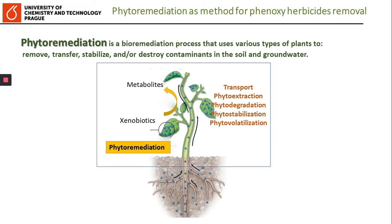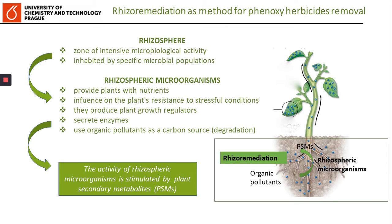Another promising and rapidly growing method of cleaning contaminated soil is phytoremediation. Phytoremediation is a bioremediation process that uses various types of plants to remove, transfer, stabilize or destroy contaminants in the soil and groundwater. The ability to take up pollutants from the soil is highly dependent on the plant species, its morphology and physiology. Plants also play a key role in soil ecosystems by stabilizing the soil structure and serving as primary sources of organic matter and energy, which stimulate soil microbial activity.